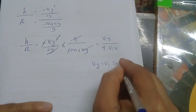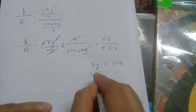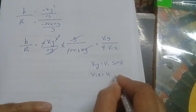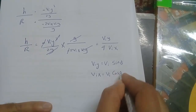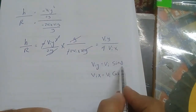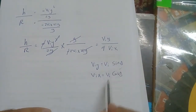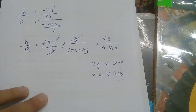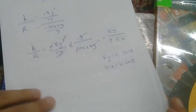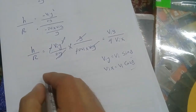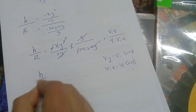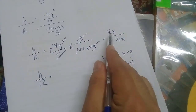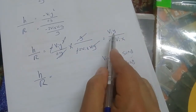So we can substitute V_iy by V_i·sine(θ) and V_ix can be substituted by V_i·cosine(θ). We can write the relation like that: H over R equals V_i·sine(θ) over 4·V_i·cosine(θ).